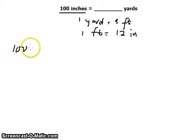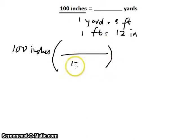Now we can proceed. Take 100 inches and multiply by the first conversion factor from inches to feet: that's 1 foot over 12 inches in the denominator. We can cancel out the inches unit.